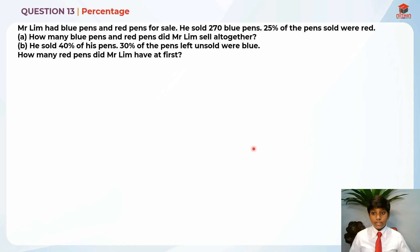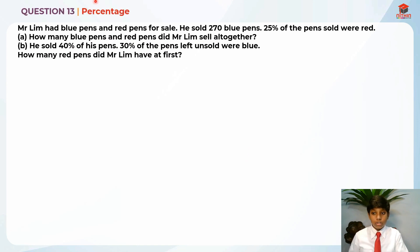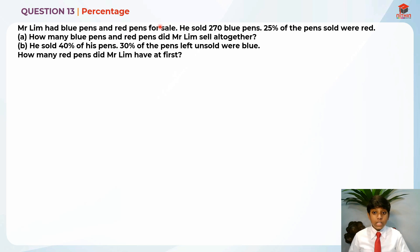This is question 13 and this question is testing us on percentage. Let's read the question for Part A first. Mr. Lim had blue pens and red pens for sale. He sold 270 blue pens. 25% of the pens sold were red. How many blue pens and red pens did Mr. Lim sell altogether?